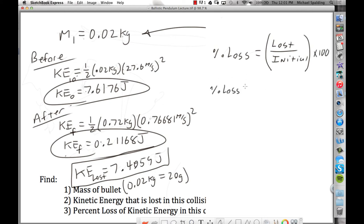Our percent loss of kinetic energy. Well, how much kinetic energy did we lose? We lost 7.4059 joules. How much did we start with? 7.6176. And then times that by 100 and we get 97.2 percent.